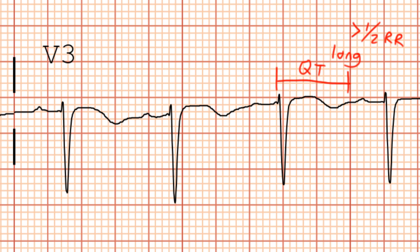Remember that a number of things can cause QT prolongation. In this case, this patient had an acute saddle pulmonary embolism that likely contributed to the QT prolongation and some of these T wave abnormalities that we can see here.